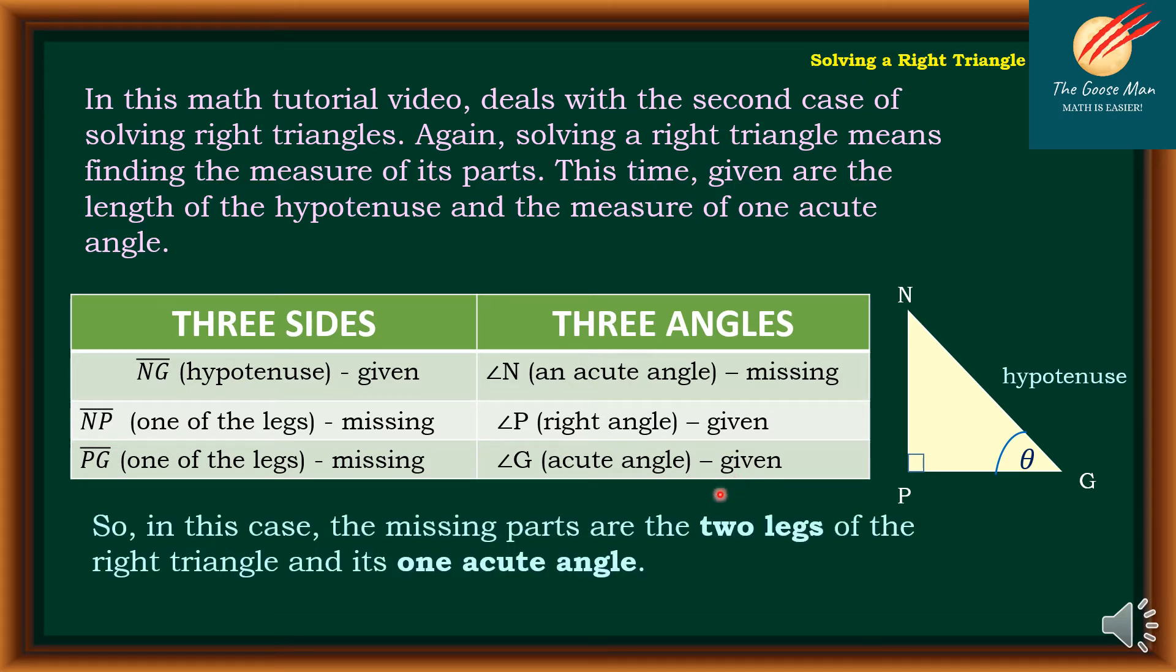So in this case, the missing parts are two legs of the right triangle and its one acute angle.